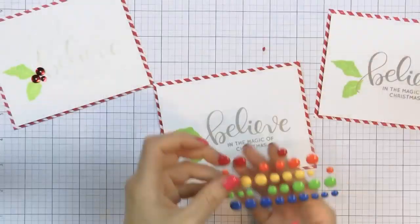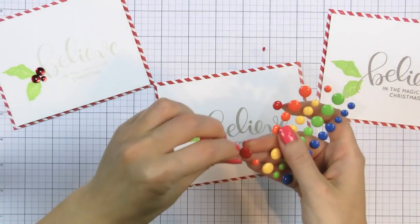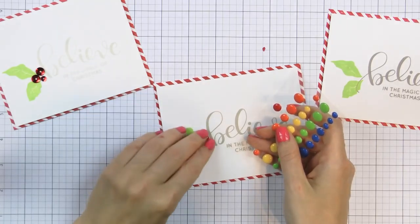To embellish these, I used enamel dots and sequins in red and I adhered them in groups of three to look like berries on my cards.